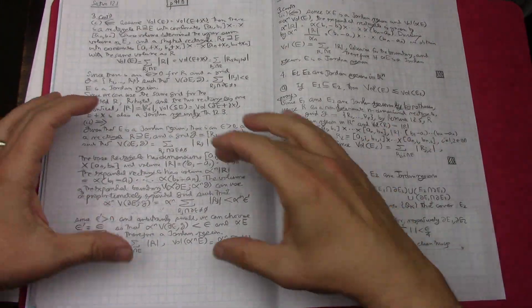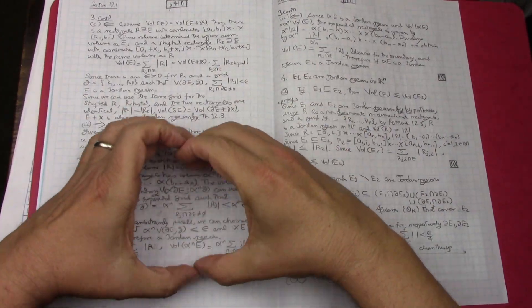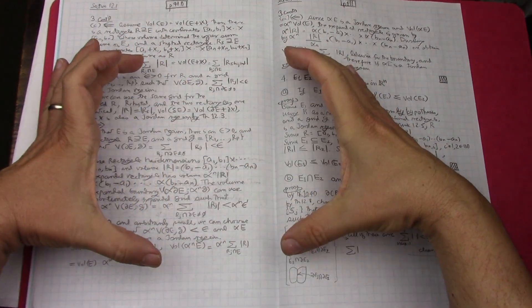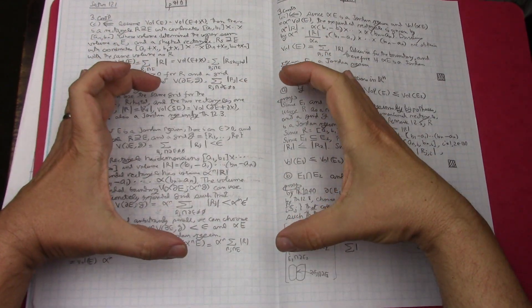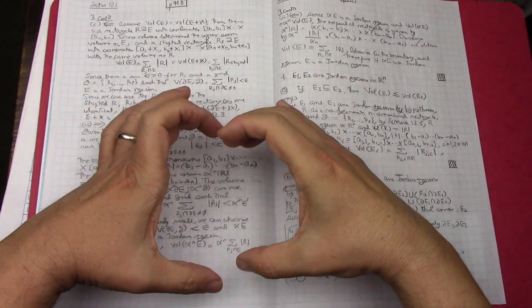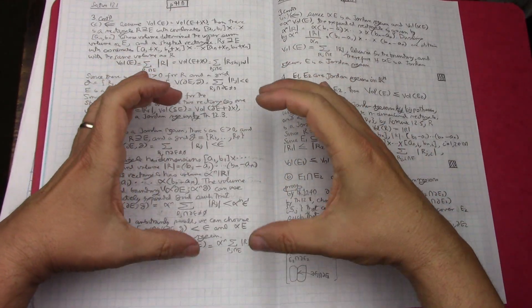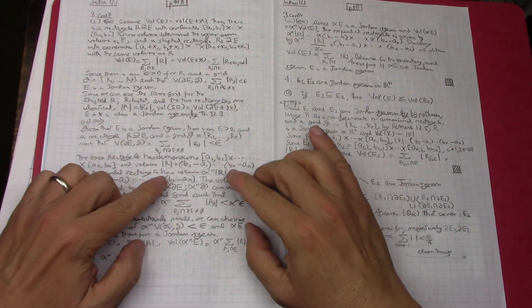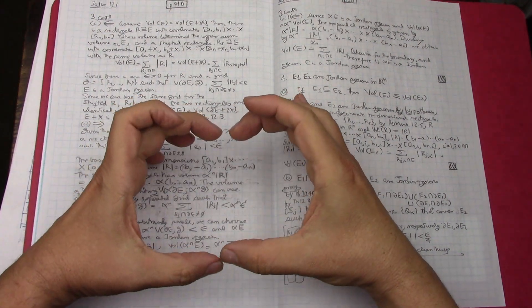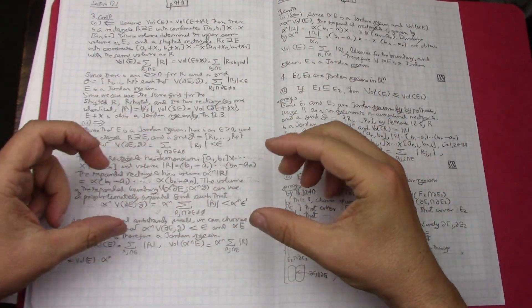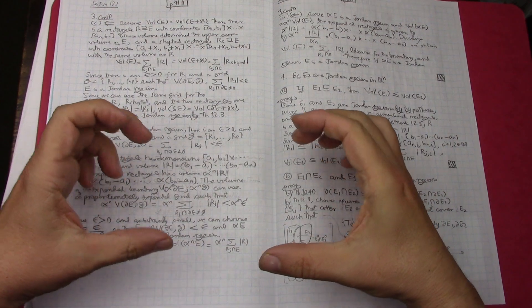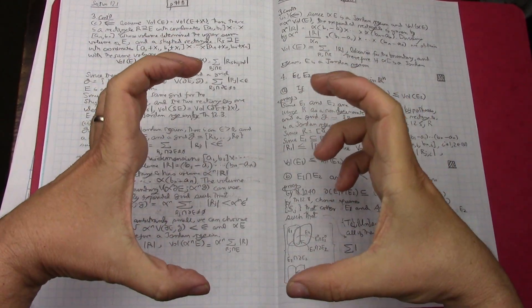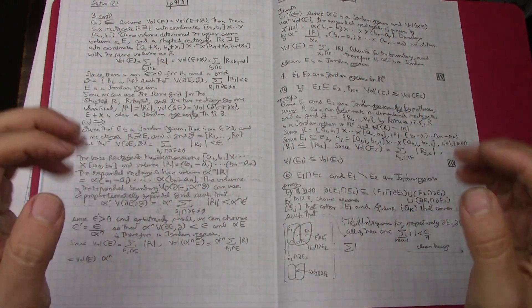And then when you scale a Jordan region by a factor alpha, that alpha is alpha to the n because each dimension gets its own alpha. And then you can show in the proof that you're altering the dimensions of the rectangle, but you can still prove that it is a Jordan region because all you're doing is just scaling, and so you're preserving the properties of the Jordan region. So I think I got that okay.